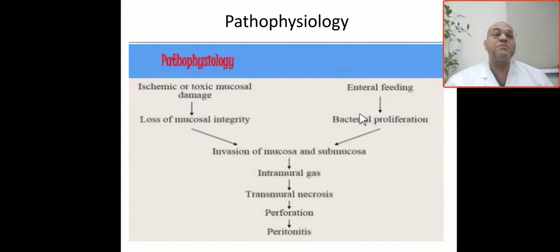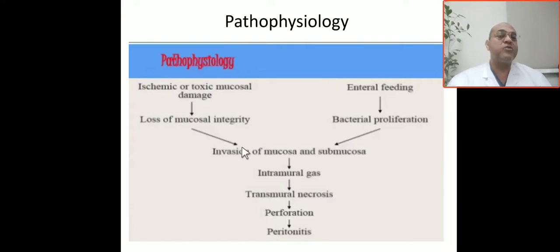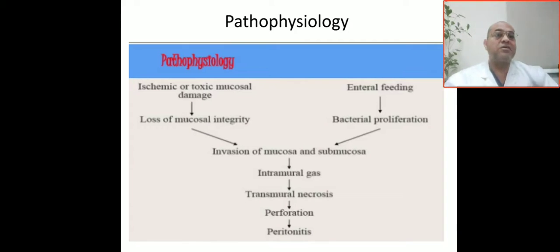Bacterial proliferation is one risk factor. Another is ischemic gut, which comes from polycythemia, perinatal asphyxia, PDA, and umbilical catheter. All these lead to ischemic gut and toxic mucosal damage, causing loss of mucosal integrity — the intestinal epithelial covering is affected. This leads to invasion of the mucosa and submucosa, intramural gas formation, then transmural necrosis, perforation, and bacterial peritonitis.